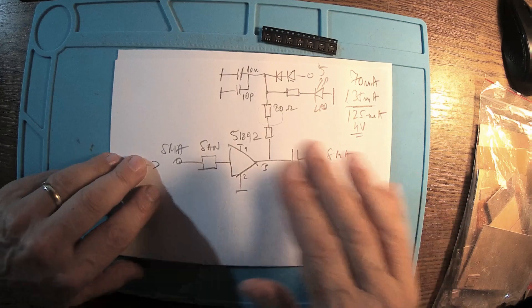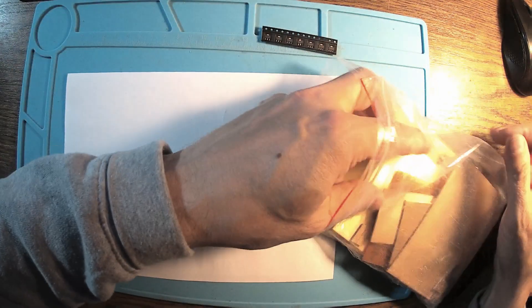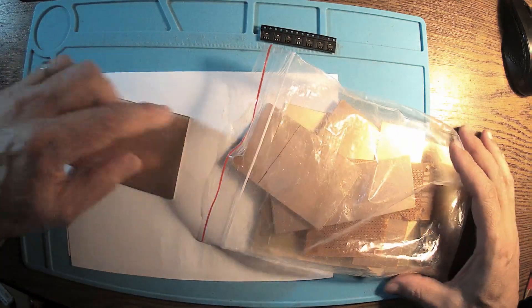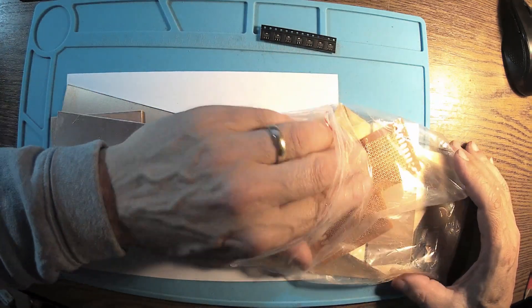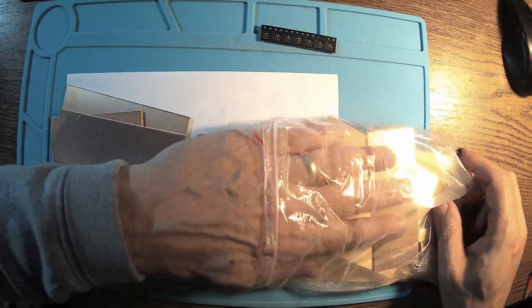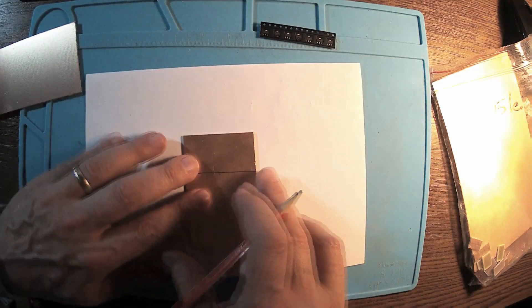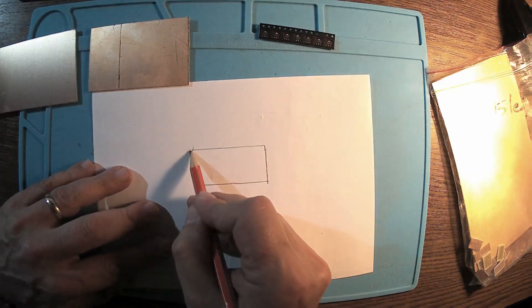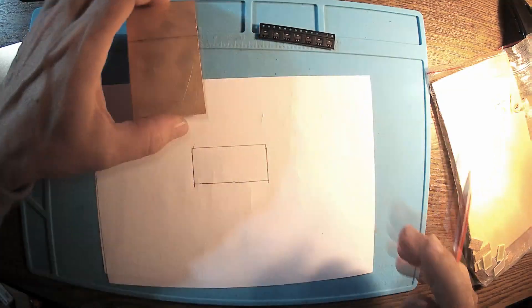Now let me find a piece of board. I think I'm going to use double-sided board, maybe I have a small piece already. Maybe something like this.